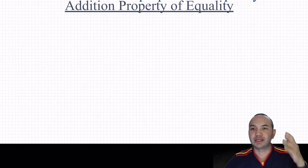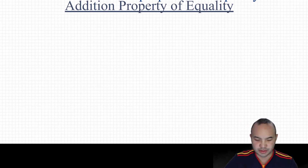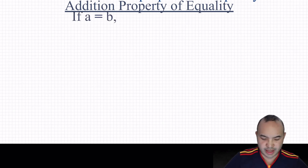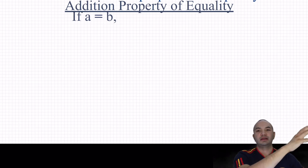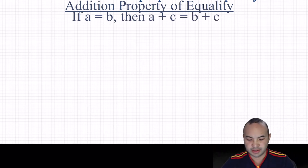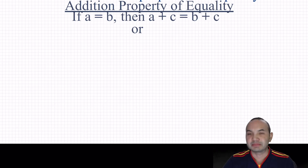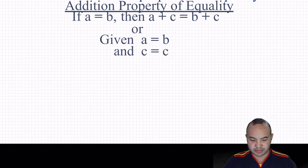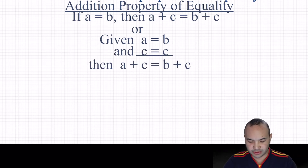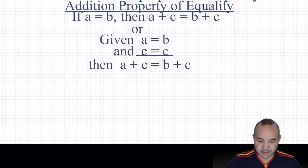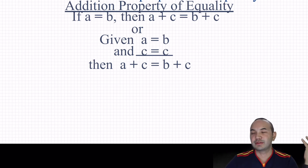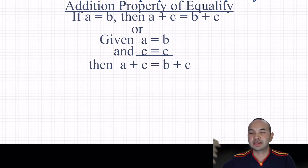Let's start with the addition property of equality. It says if A equals B, and you add the same number or variable to both sides, then the equation is still true — it's still equal. For example, 10 equals 10. If I add 5 to both sides, 15 still equals 15. The subtraction property of equality says the same thing: if 10 equals 10, and I subtract 2 from both sides, I get 8 equals 8.